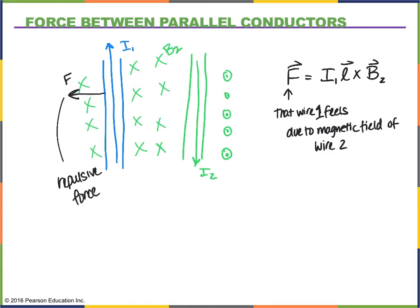If I looked at the force that wire number two feels, I would find it also feels a force to the right. I can determine this by going step by step through finding the field due to wire one near wire two and then applying the right-hand rule, or by using Newton's third law — these two forces are an action-reaction pair, so the force on wire two is equal and opposite to the force on wire one.